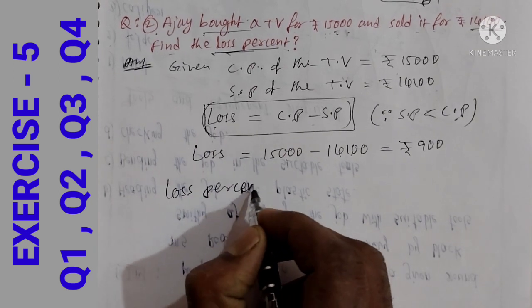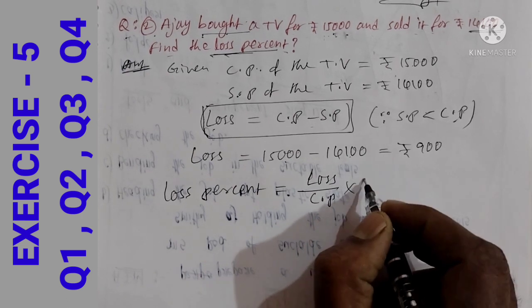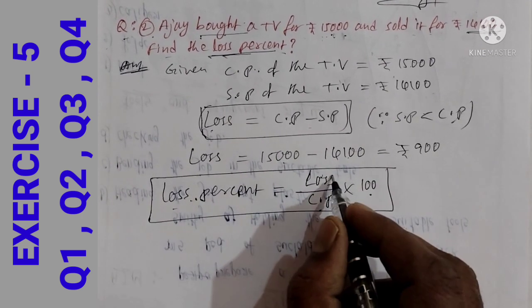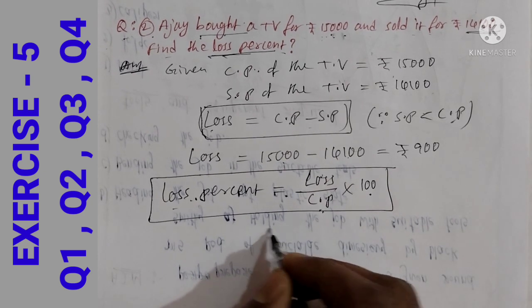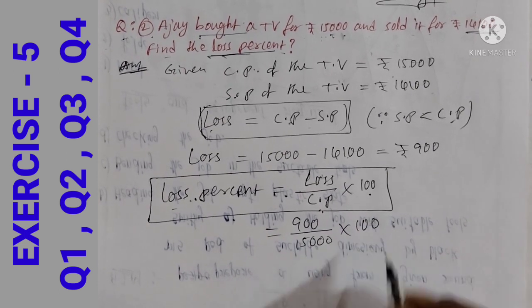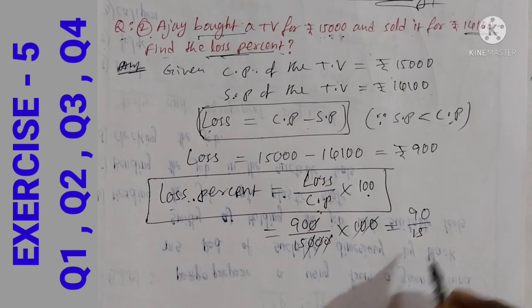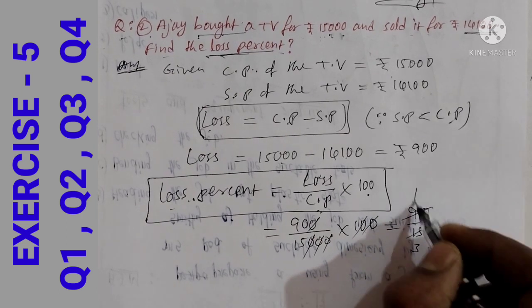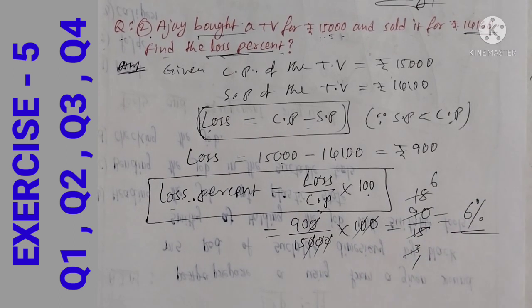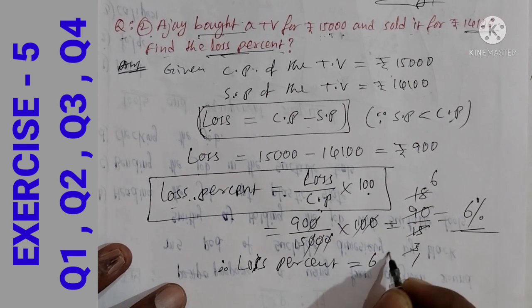Loss percent formula: loss percent = loss divided by cost price, multiplied by 100. Loss = 900, cost price = 15,000. So loss percent = 900 divided by 15,000 multiplied by 100. Cancel zeros: 90 divided by 15 = 6. Therefore, loss percent is 6%.